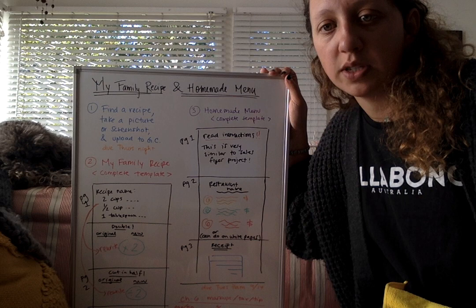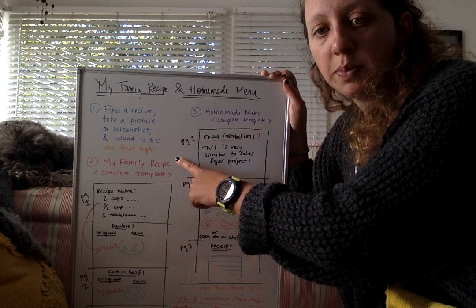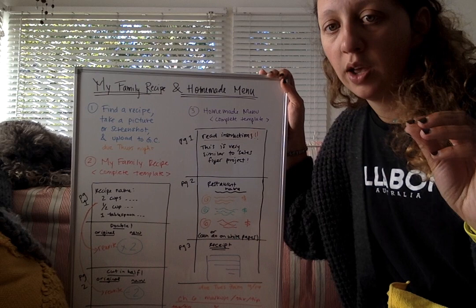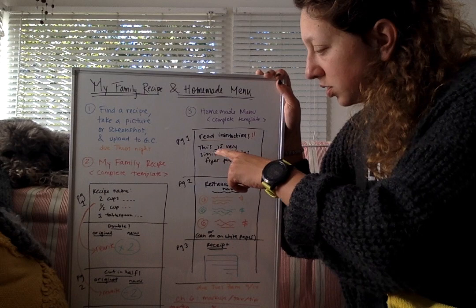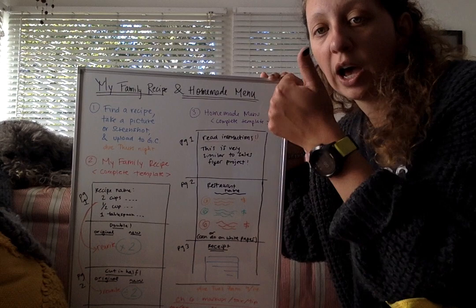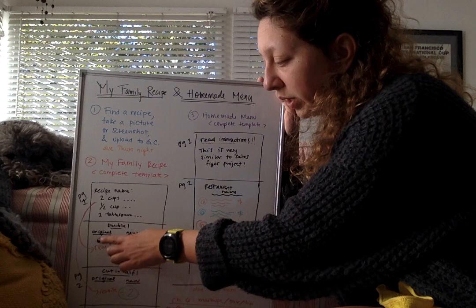Then the next thing is there's the 'My Family Recipe' template in Google Classroom. So it'll make you a copy of that Google document and you're gonna fill it out using the recipe you took in step one. So first over here they have you write down the recipe that you took a picture of, how much of each ingredient.